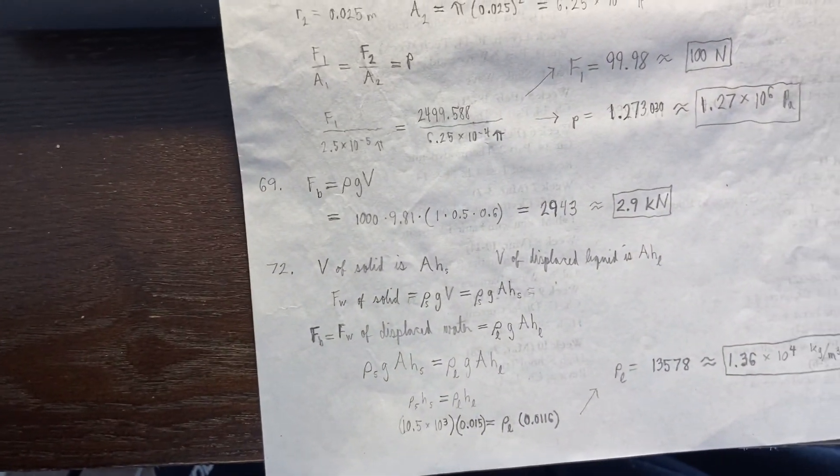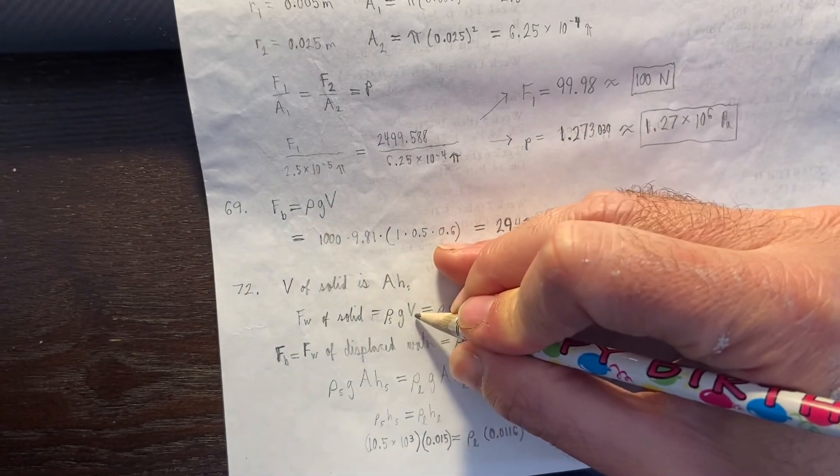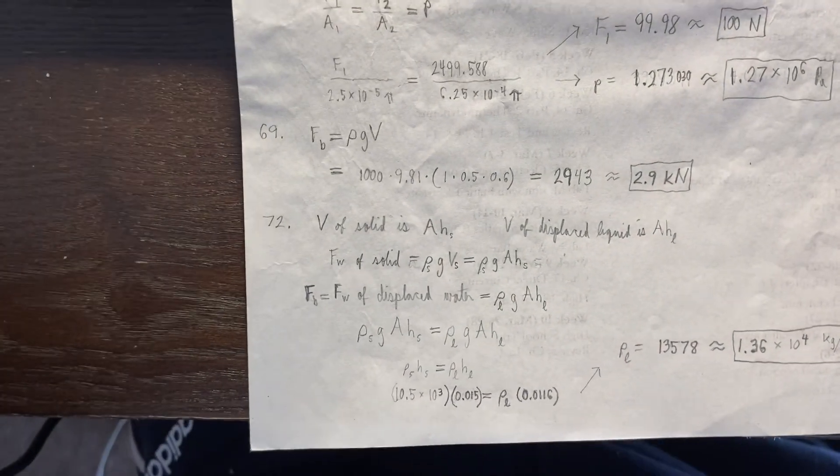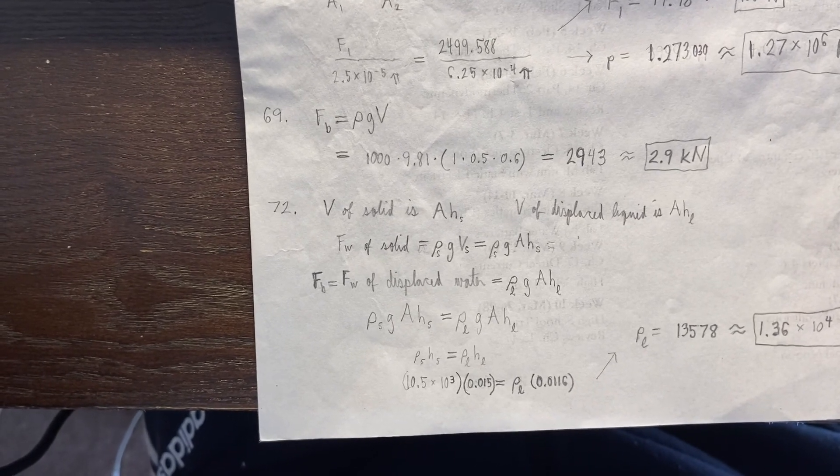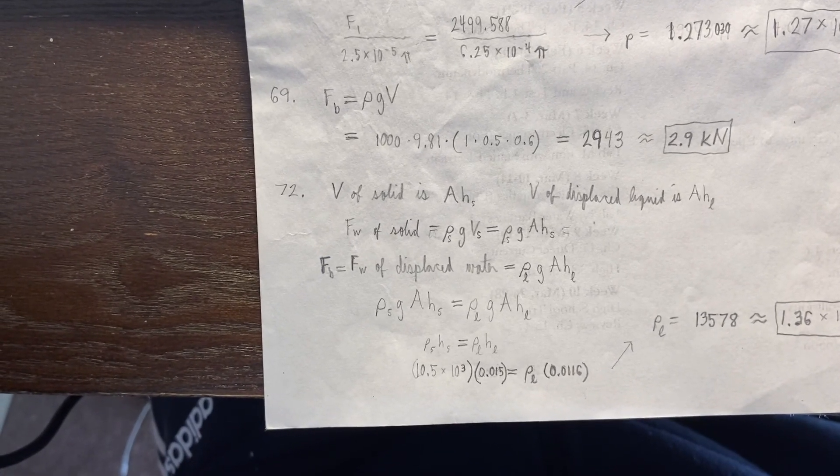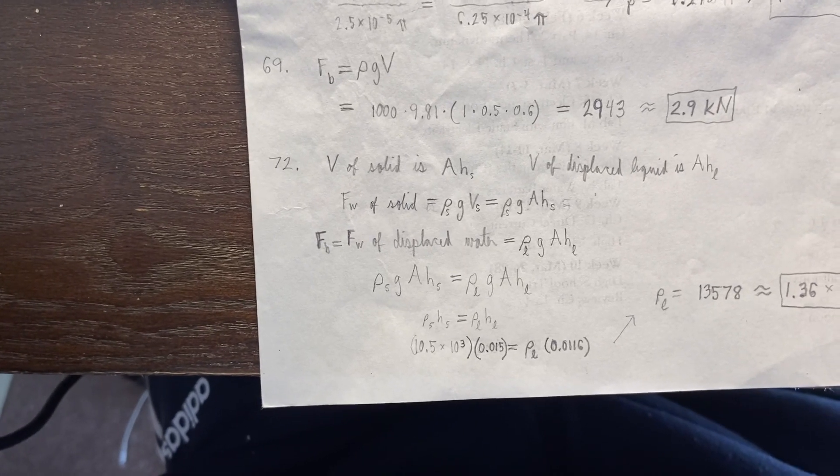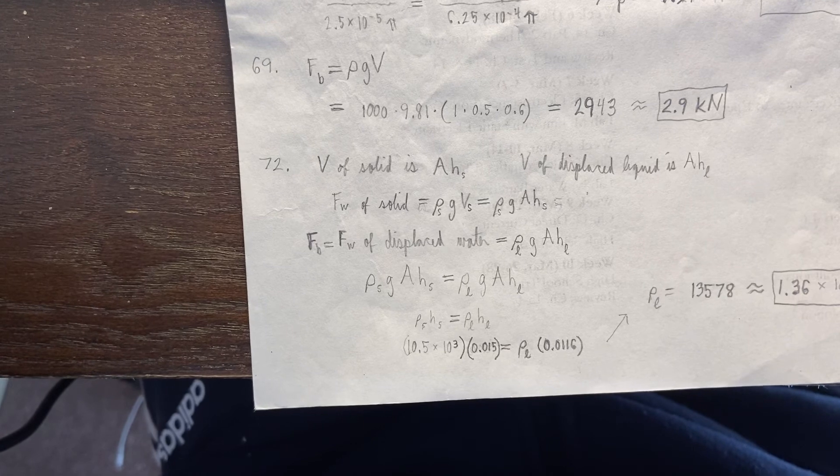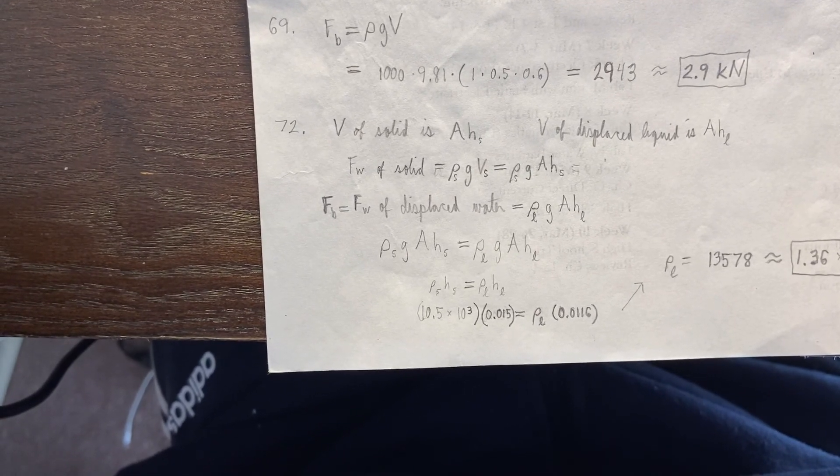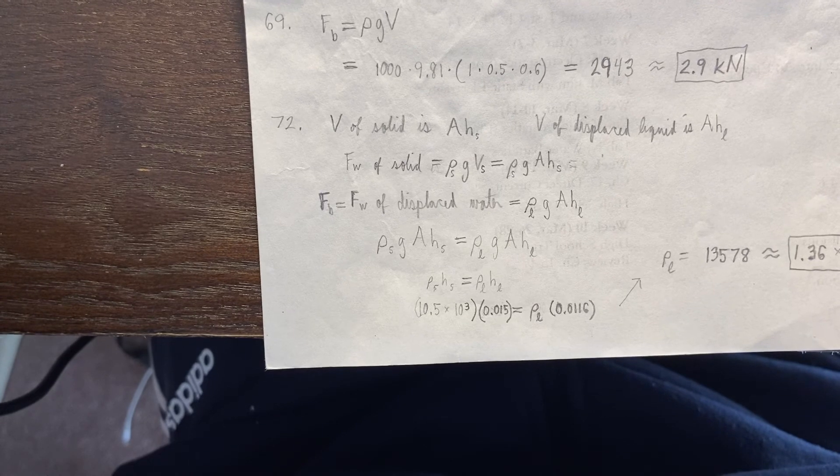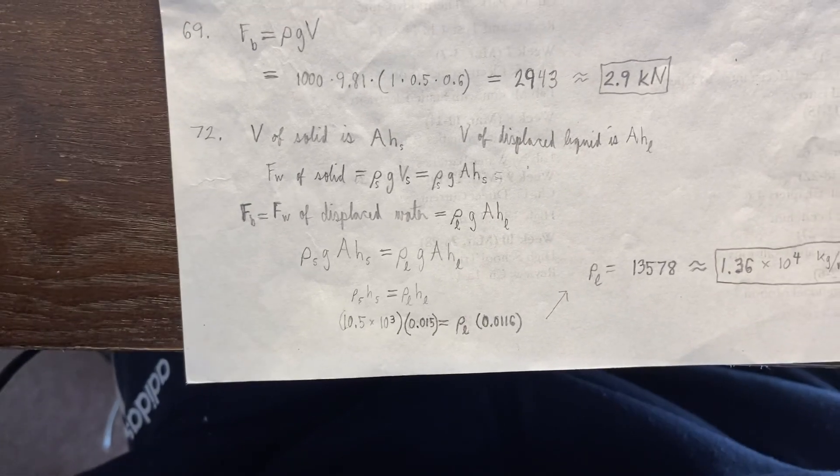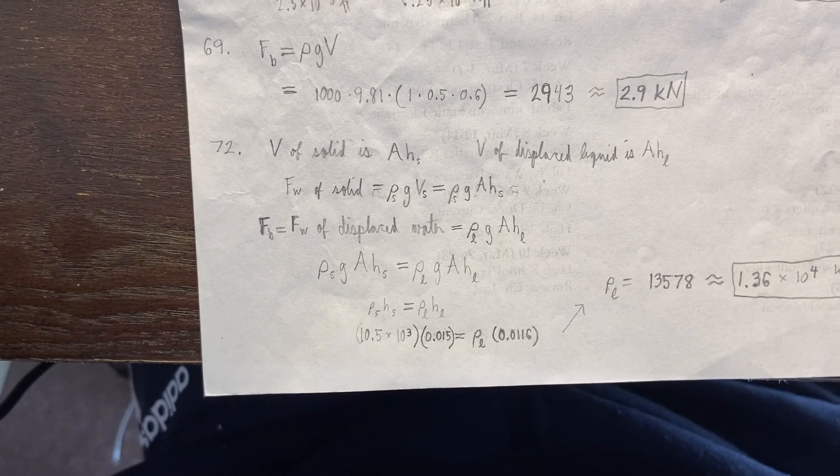In fact, I can, just to be clear, I can put a little s here because we're talking about the volume of the solid. So rho s gv, and so my buoyant force is the force of weight of the displaced water by definition. And now that's going to be rho l g a h l. So rho s g a h s equals rho l g a h l, and the g's cancel, so I'm just left with rho s h s equals rho l h l. Solving for rho l, I get 1.36 times 10 to the 4th kilograms per cubic meter.